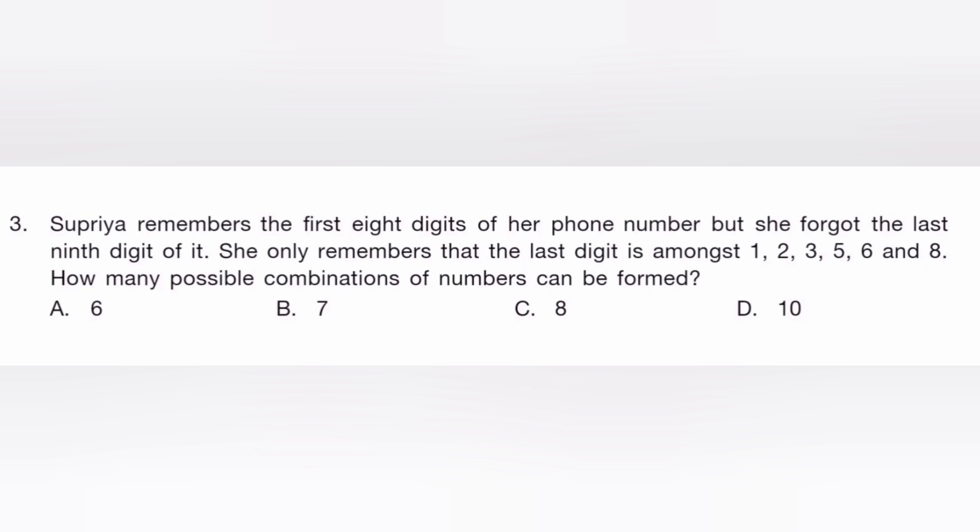Supriya remembers the first eight digits of her phone number but she forgot the last digit. She only remembers that the last digit is among one, two, three, four, five, six, and eight. How many possible combinations of the number can be formed? The answer is A, six.